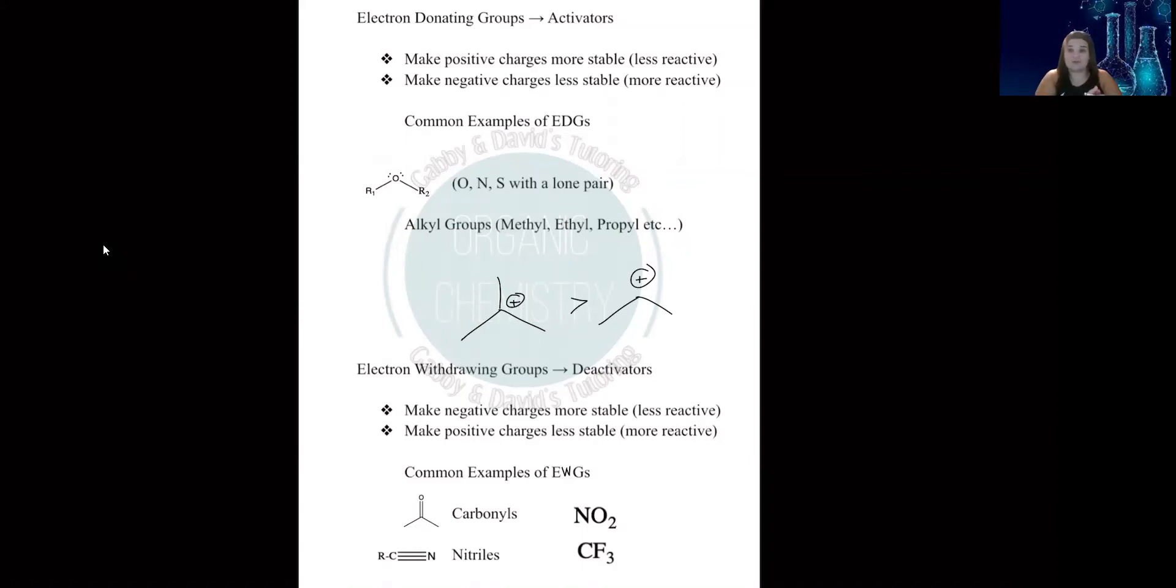In addition to donating groups, we also have electron withdrawing groups. Those are the exact opposite. Electron withdrawing groups, also known as deactivators, make negative charges more stable. Common examples include carbonyls, nitriles, NO2, and CF3.